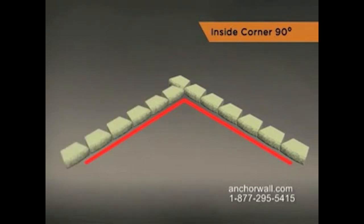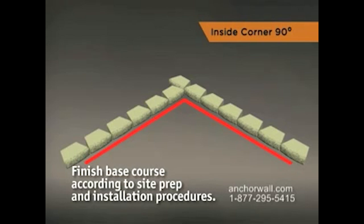For the second wall, lay a block perpendicular to the first corner block and continue laying out the rest of the base course working from the corner out. Finish the base course according to site prep and installation procedures.